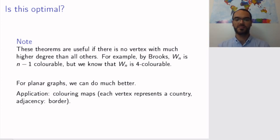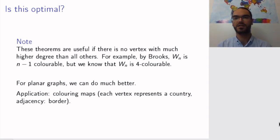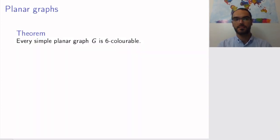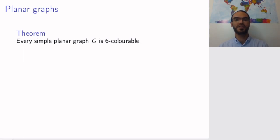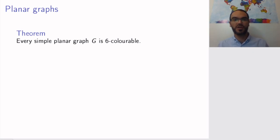But let's wait with this application for later and go back to our problem: namely, how many colors do we need to color planar graphs? Perhaps surprisingly, it turns out that there is an absolute number that we know we can use. Namely, every simple planar graph is six-colorable. Whichever planar graph you can imagine, six colors will always be enough to color the vertices in the fashion we want.